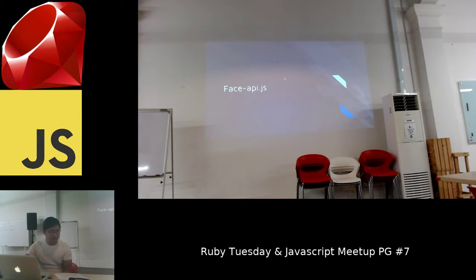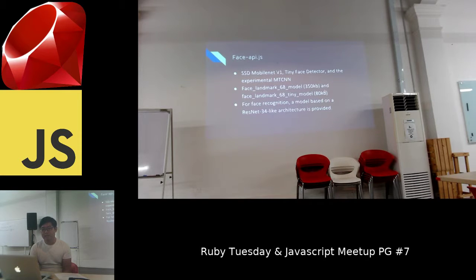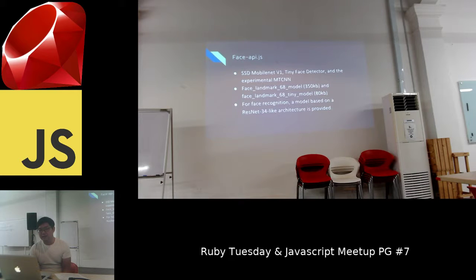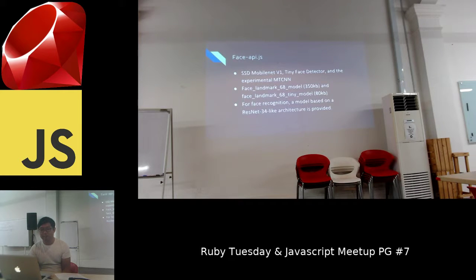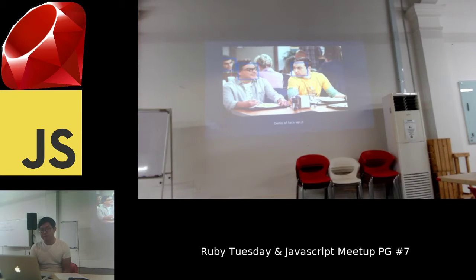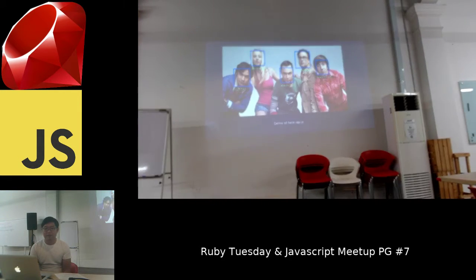So what is faceapi.js? It's quite new — it was implemented last year. It uses three models: SSD MobileNet V1, Tiny Face Detector, and Experimental MTCNN. It also uses the face landmark 68 model, which is only 350 KB, and the tiny version of the face landmark 68 model is only 80 KB. For facial recognition, a model based on ResNet-34 architecture is provided. This is the demo showing faceapi.js recognizing all faces from pictures.